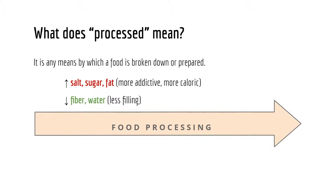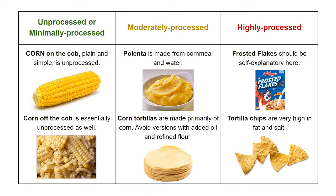What does processed really mean? It is any means by which a food is broken down or prepared. Typically we add salt, sugar, and fat — making the food more addictive, more caloric, more delicious. At the same time, we are reducing fiber and water, making the food less filling and thus easier to overeat. Plain old corn is an unprocessed food — it is a whole plant-based food. Highly processed would be frosted flakes or potato chips — those are the foods we want to avoid.